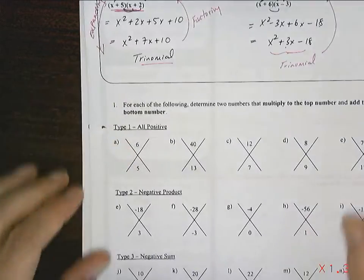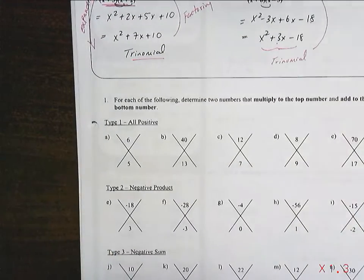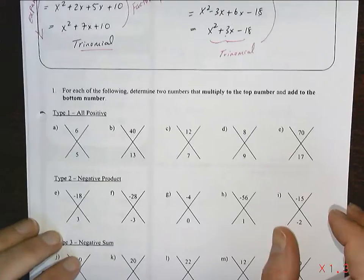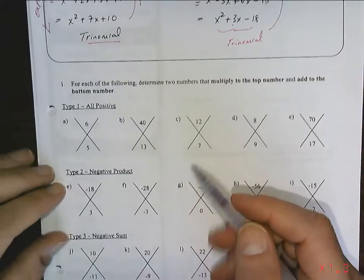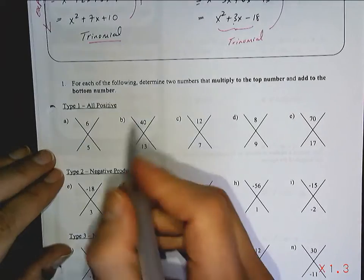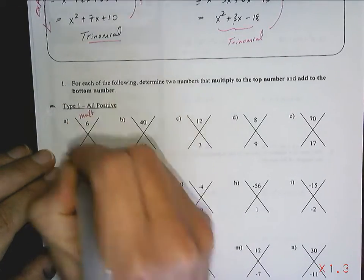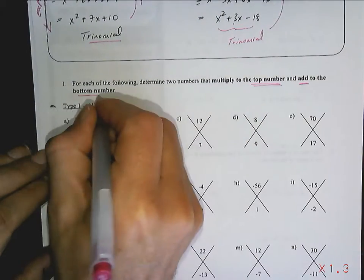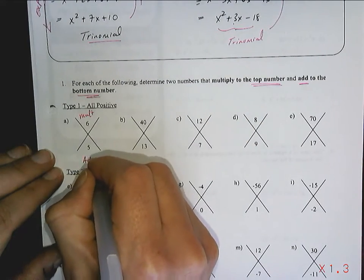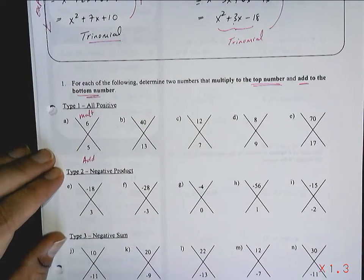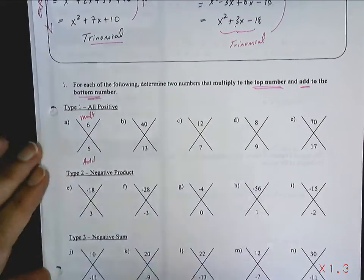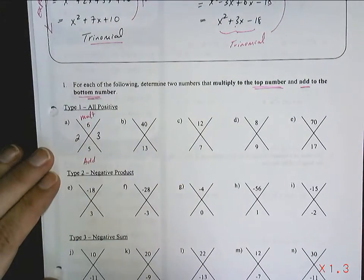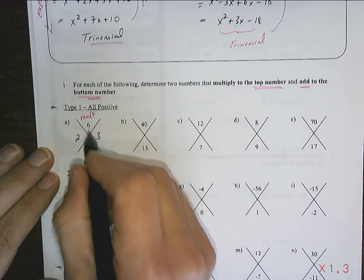So we're going to start off by practicing how to come up with numbers that add to something and multiply to something. So here's our examples. We want to find a number that will multiply to the top number and add to the bottom number. So I want two numbers that will multiply to 6 and add to 5. Well, the answer is 2 and 3.